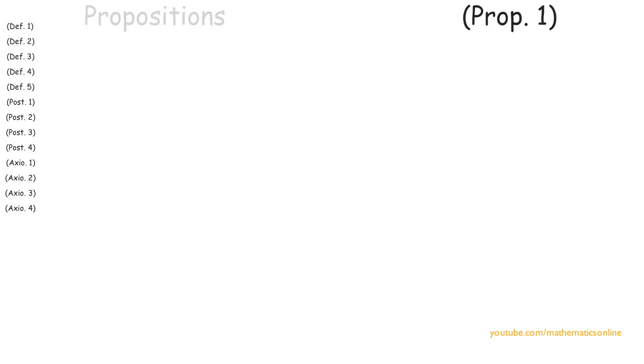So now we begin with our very first proposition and it states that with any straight line you can always make a perfect equilateral triangle.